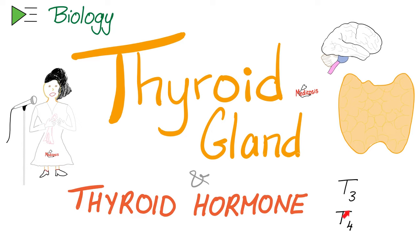We call them thyroid hormone, and they include T3 and T4. Which one is more abundant? T4. Which one is more active? T3.